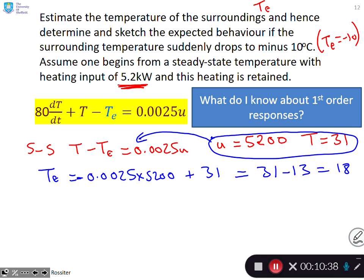Now the next bit is what happens when TE goes from 18 to minus 10. This is a drop of minus 28, so TE has changed by 28 degrees. Where do you start? You start at 31, you drop by 28 degrees. Let's go to the next slide to do this.